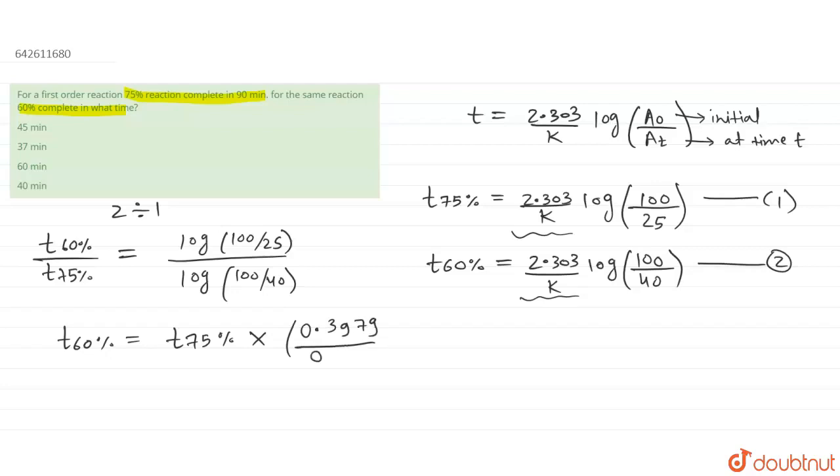This will come out to be 0.3979 divided by 0.602. The above one is for log 100 by 25, and denominator is for log 100 by 40. t₇₅% is given as 90 minutes, so when you calculate 90 into this particular value...